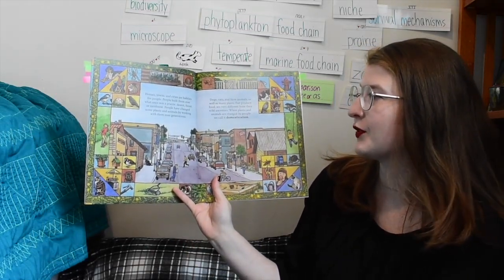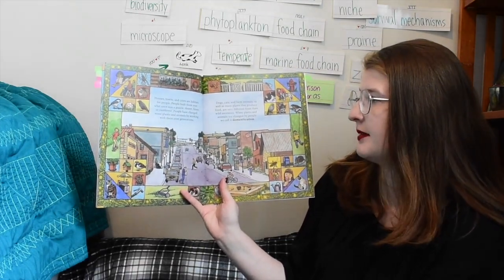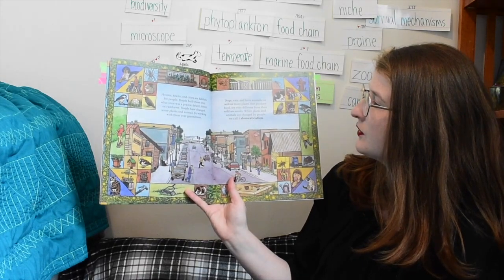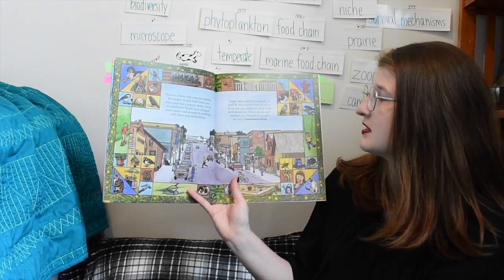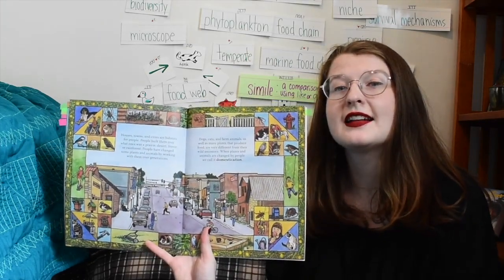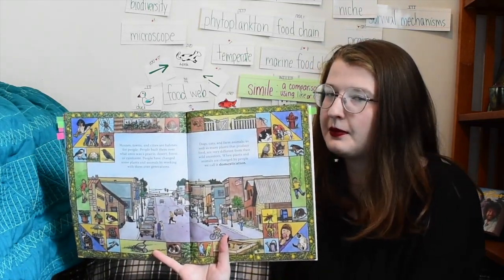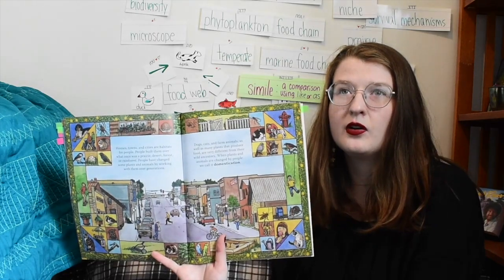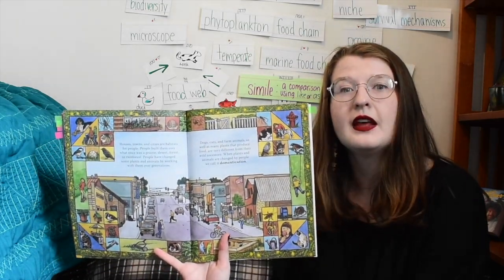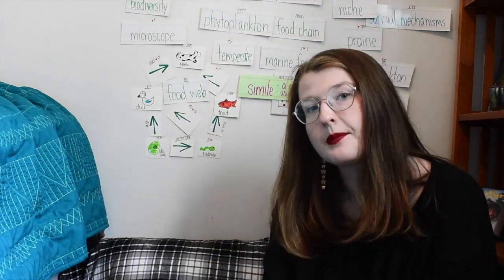Houses, towns, and cities are habitats for people, built over what once was prairie, desert, forest, or rainforest. People have changed some plants and animals by working with them over generations. Dogs, cats, and farm animals, as well as many plants that produce food, are very different from their wild ancestors. When plants and animals are changed by people, we call it domestication. Dogs come from wolves — people started hunting with wolves and through domestication they slowly adapted to become pets we keep in our environments.